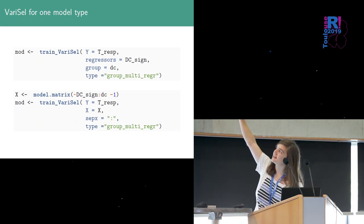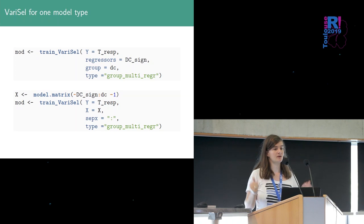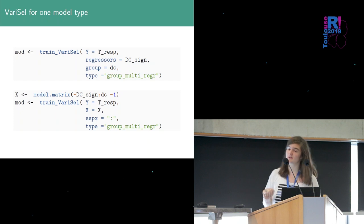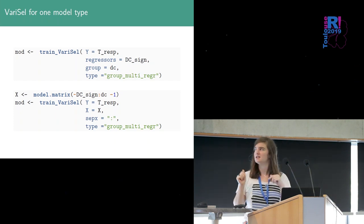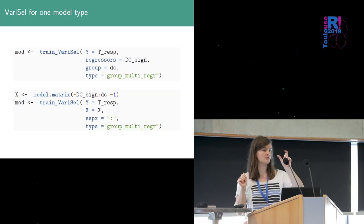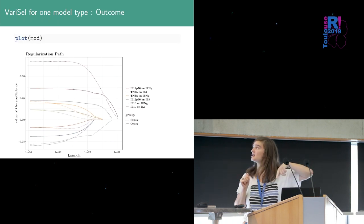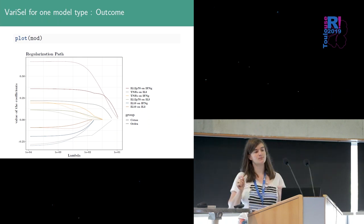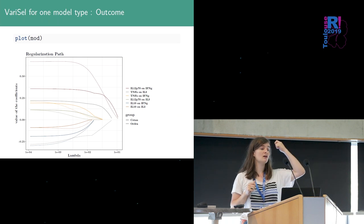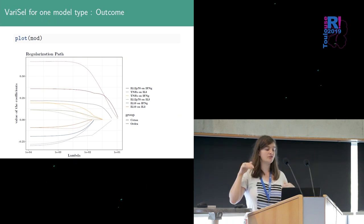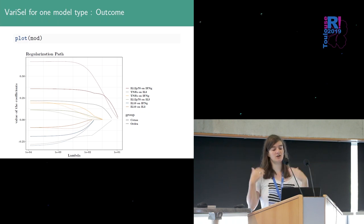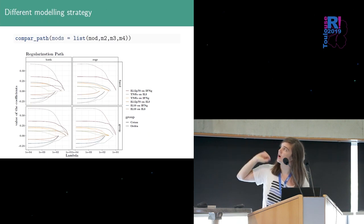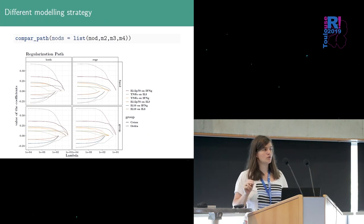So here we chose to do a group lasso model so we select for each DC signal this for each DC type the same this is the same association with this signal and Th response so this is the result when we plot the regularization path so each color correspond to a link between a DC signal and the Th response and the line type correspond to whether this association is found on the cDC2 cell or the other cells so we can see that each color are selected all together.